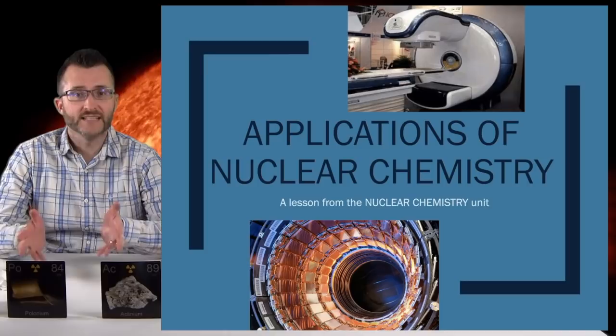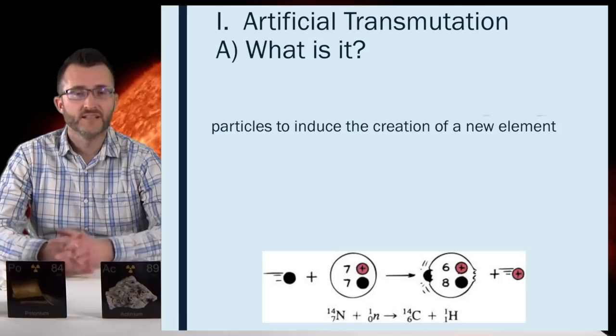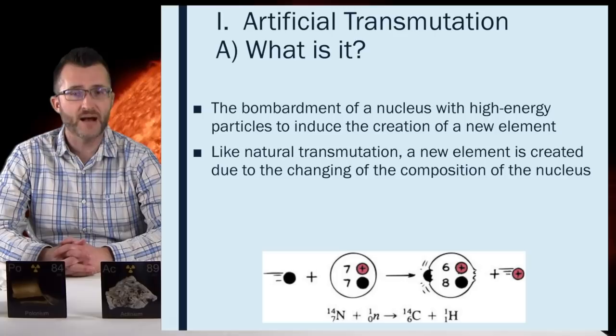Applications of nuclear chemistry. A lesson from the nuclear chemistry unit. Artificial transmutation. What is it? The bombardment of a nucleus with high energy particles to induce the creation of a new element. Like natural transmutation, a new element is created due to the changing of the composition of the nucleus. In this case, it does not happen on its own. Instead, it is forced to occur.